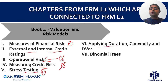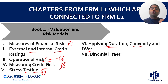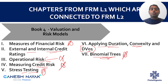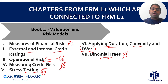DV01, Duration, and Convexity will also be tested in Level 2 — not from a calculation perspective but from a conceptual hedging perspective, such as making your portfolio duration-hedged. DV01 as a concept will again be tested in the Market Risk book. Binomial Trees are very important — there are three to four chapters in Level 2 that discuss creating a tree to value an option, using the same approach learned in Level 1. Book 4 is very important overall, so do not miss it.